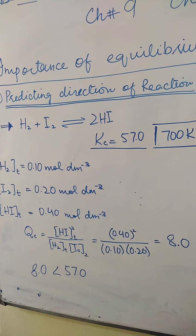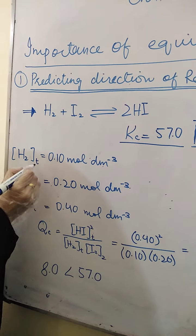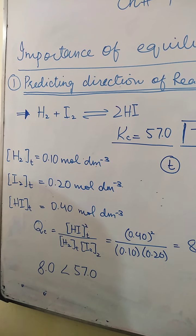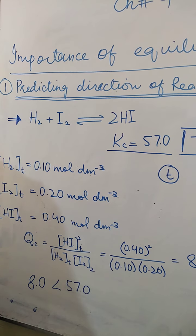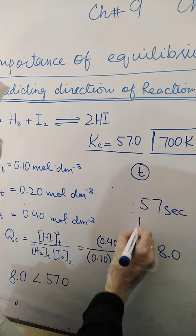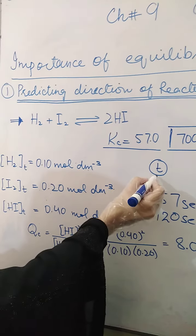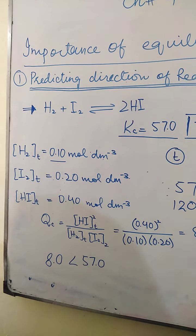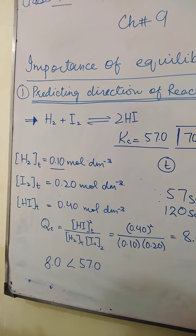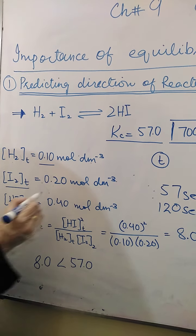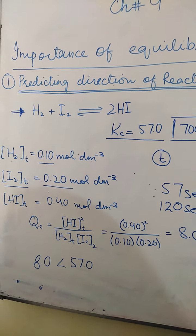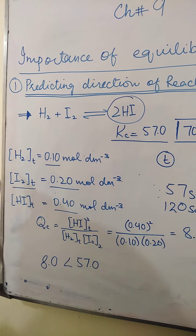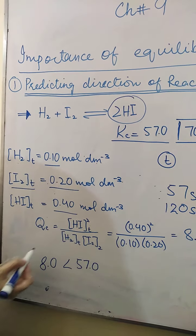Now, how can we predict the direction of reaction? Suppose at some particular time — say at 27 seconds or 120 seconds — you pick up the concentration of hydrogen in the reaction mixture and find it is 0.1 moles per decimetre cube. At that same time, you find the concentration of iodine is 0.2 moles per decimetre cube, and the concentration of hydrogen iodide is 0.4 moles per decimetre cube. We can put these three concentrations into the equilibrium constant expression.